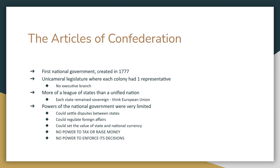The powers given to the Articles of Confederation were very, very limited. The legislature could settle disputes between states, regulate foreign trade and Native American trade, and set the value of national and state coins so that all trade would be fair. But they had no power to tax, no power to raise money, no power to do any of that on a national level. They had to rely on the states to give them money, and there was no power to enforce its decisions.